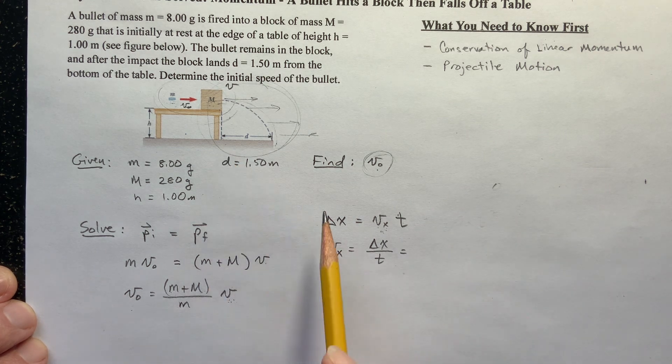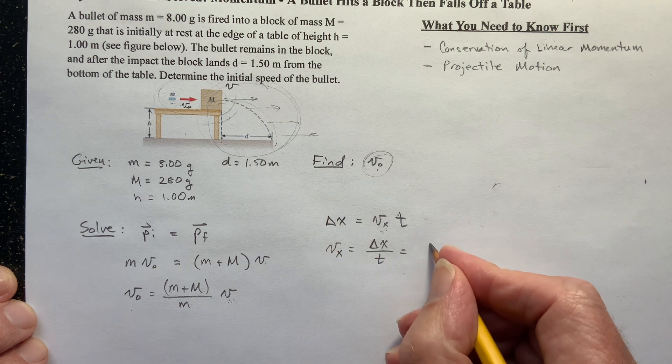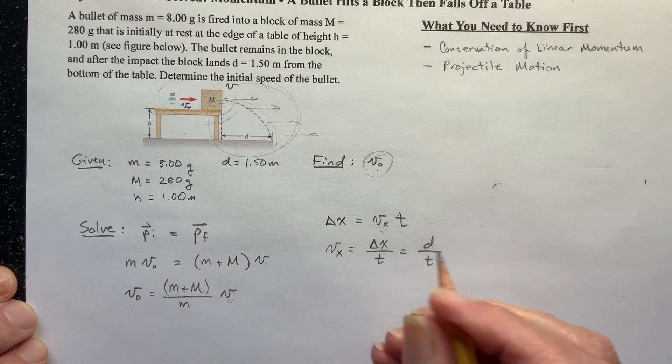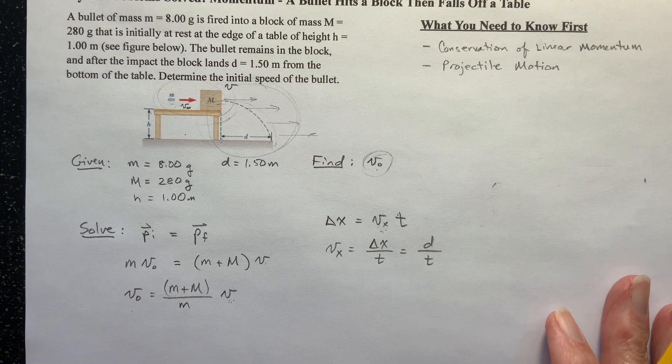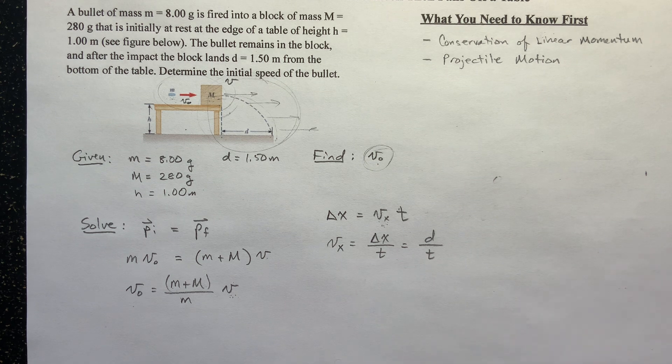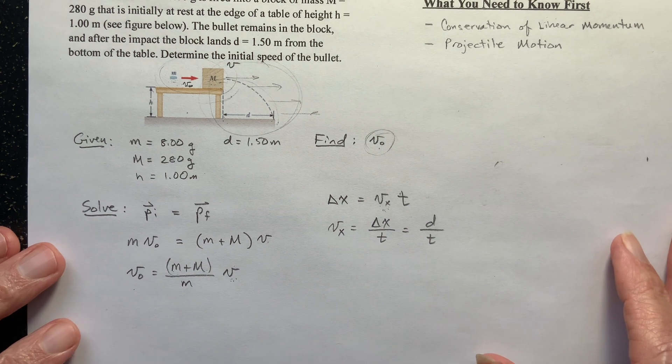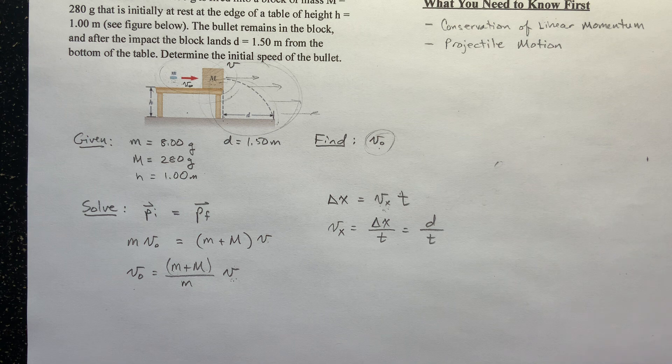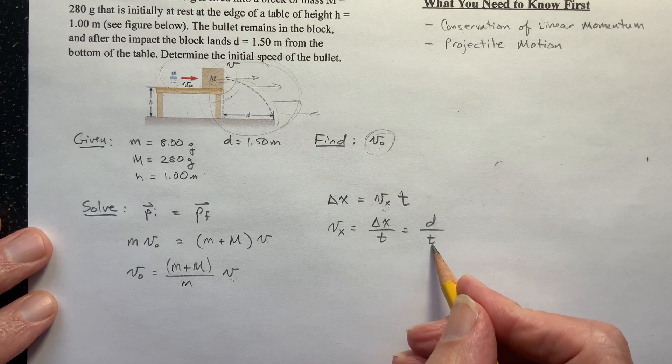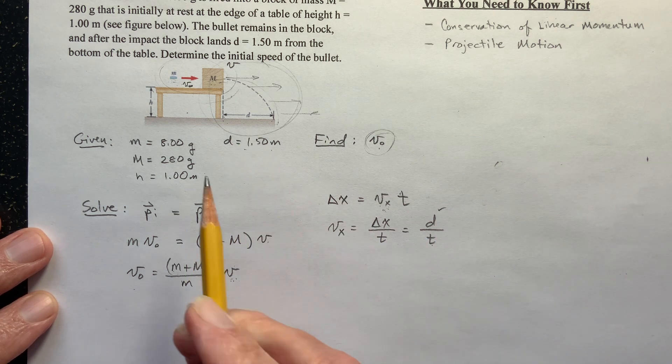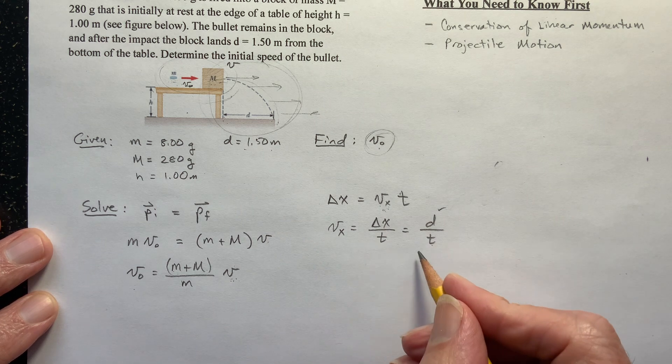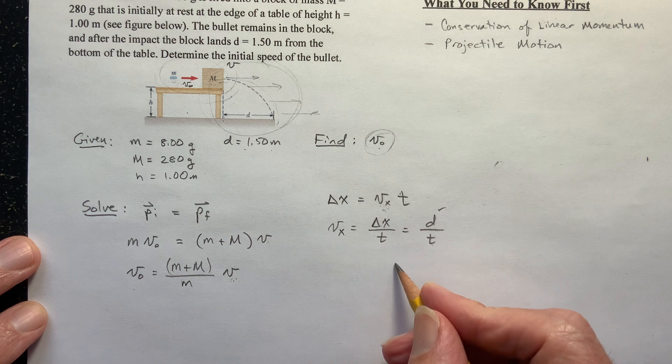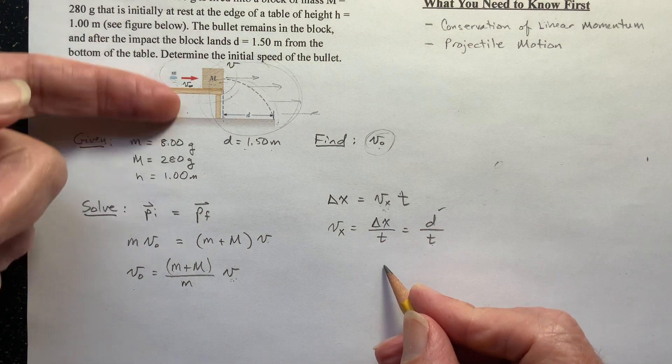This delta x is from here to here, we're calling it d in this problem. That's what they gave. I don't like using d for a displacement, I think that's a bad practice, but you'll see it in books and tests. They use d, just use delta x, but they use d. Now I know what d is because it's given, but I don't know what the time is. So I need to figure out how much time went by. Let's do that by looking in the vertical direction.